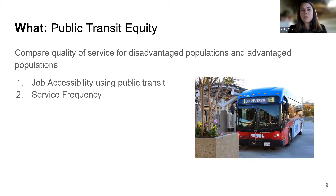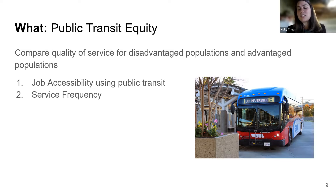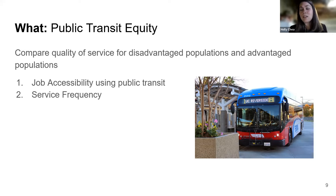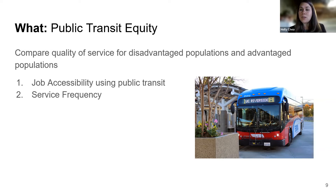Moving on to what we studied: public transit equity. We looked specifically at job accessibility and service frequency for advantaged and disadvantaged populations, defined using an index we'll cover shortly. We looked at both advantaged and disadvantaged communities and how they were able to access jobs before and after the pandemic — and whether service frequency changed. Frequency would determine what type of jobs they could access and within what time frame — one trip per day versus five trips per day would significantly limit the areas they could reach.